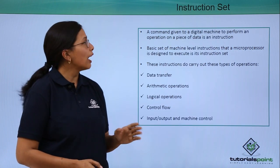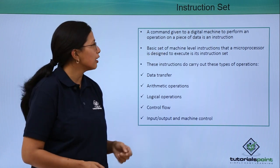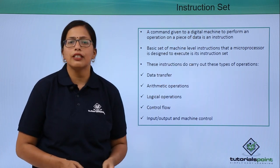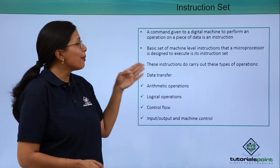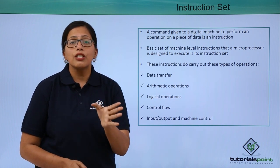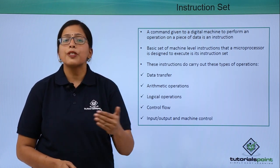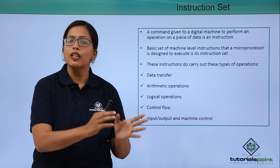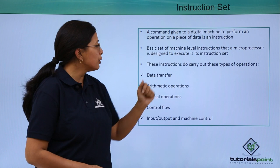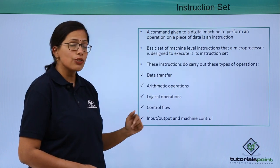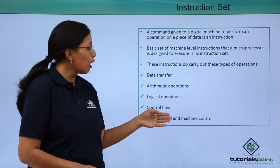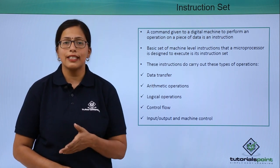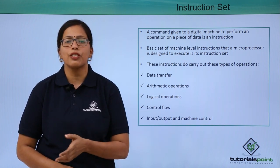Next, let's look at the instruction set. A command given to a digital machine to perform an operation or process a piece of data is called an instruction. For a microprocessor, these instructions take on special meaning because all the jobs and functions that can be executed by the microprocessor have to be implemented in the form of instructions. These instructions should be able to do data transfer, arithmetic operations, logical operations, control flow, input/output, and machine control. In our next video, we will see how important these instruction sets are and how they differentiate between different microprocessor concepts.